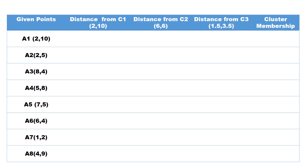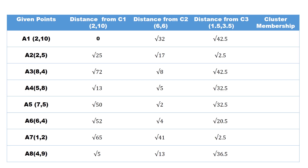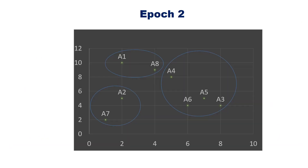Perform the next iteration. Compute the distance of each point from the new cluster centroids: distance from (2,10), distance from (6,6), distance from (1.5, 3.5). Assign points to the nearest cluster: A1 → C1, A2 → C3, A3 → C2, A4 → C2, A5 → C2, A6 → C2, A7 → C3, A8 → C1. After the second iteration: A1 and A8 are in cluster 1; A3, A4, A5, and A6 are in cluster 2; A2 and A7 are in cluster 3.